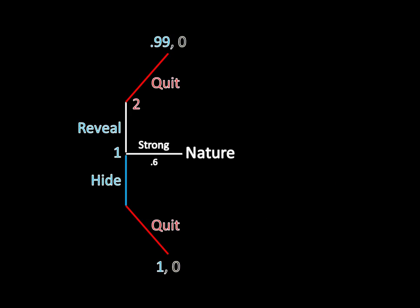Let's focus on the strong type first. The strong type in this alleged pooling equilibrium is hiding, and then Player 2 is quitting, which gives him a payoff of 1. If he deviates, his only other option is to reveal, in which case Player 2 quits and he receives a payoff of 0.99. Since 1 is slightly better than 0.99, he is happy to continue with his equilibrium strategy. The strong type has no profitable deviation.